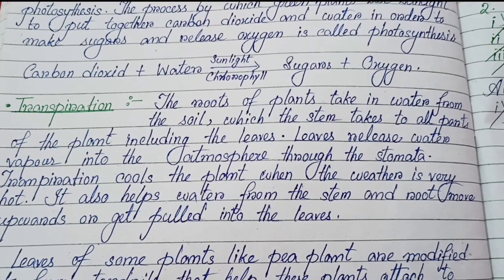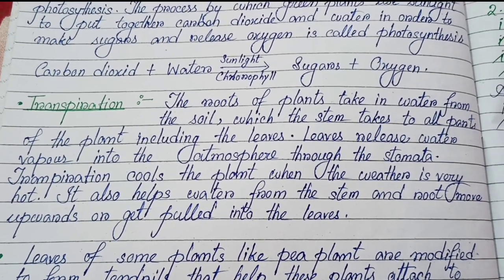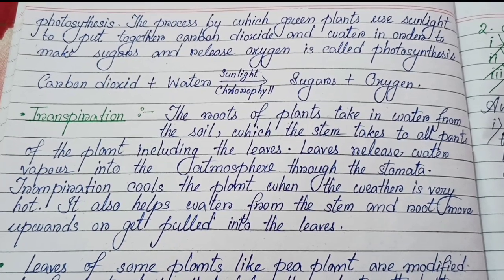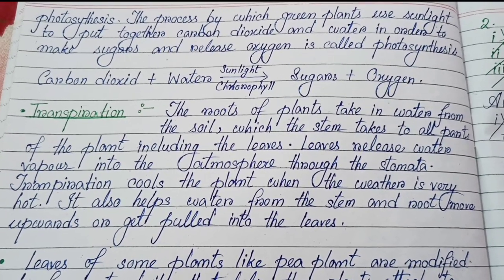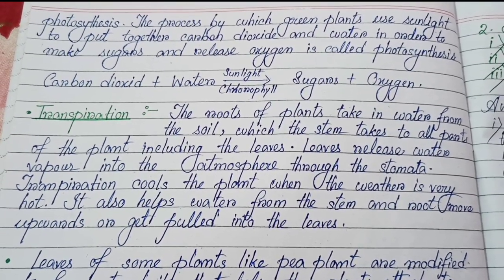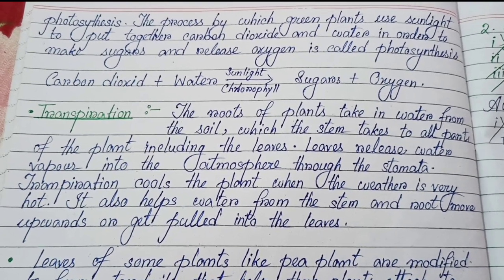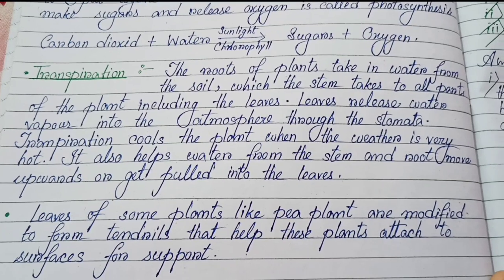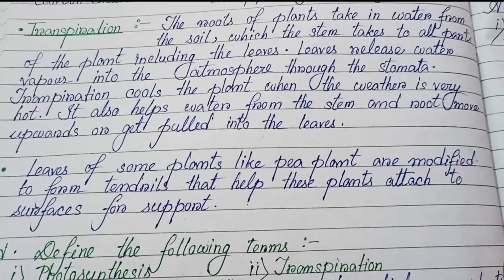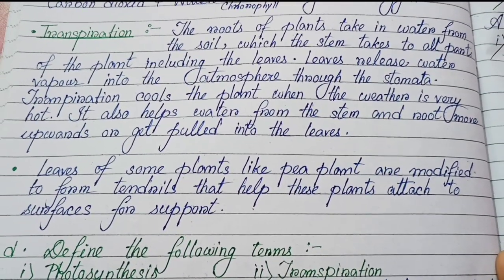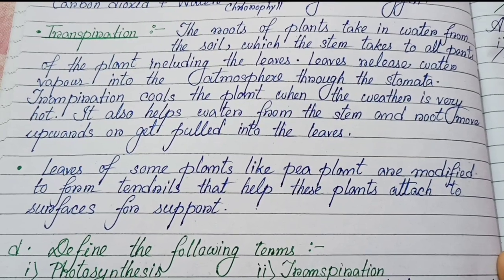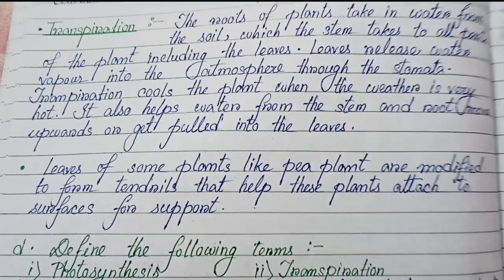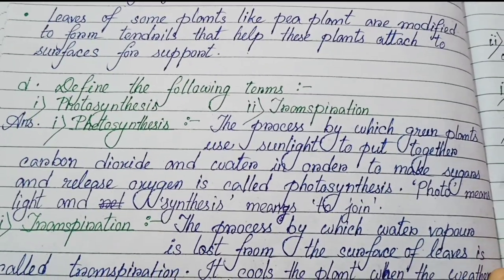Second function of leaf: transpiration. The roots of plants absorb water from the soil, which the stem takes to all parts of the plant including the leaves. Leaves release water vapor into the atmosphere through the stomata. Transpiration cools the plant when the weather is very hot, and also helps water from the stem and roots move upwards into the leaves. Third, leaves of some plants like the pea plant are modified to form tendrils that help these plants attach to surfaces for support.